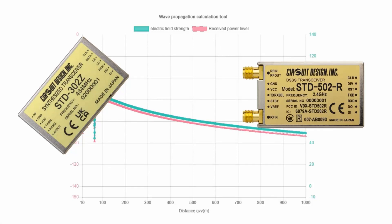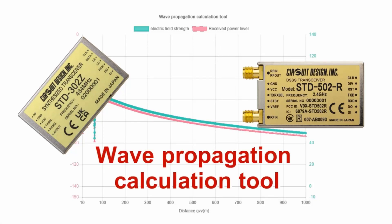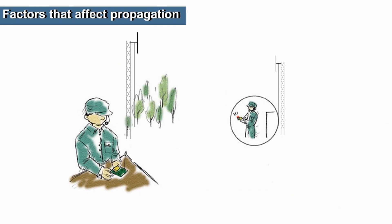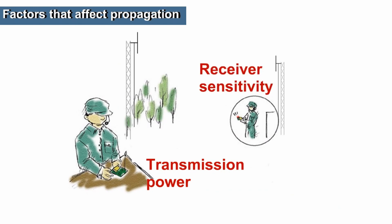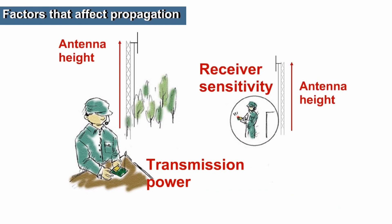Hello, I'm John Bell, Application Engineer at Circuit Design Japan. In today's video, we are going to introduce the Wave Propagation Calculation Tool. The goal of this tool is to teach those who use radio modules, like the ones at Circuit Design, on how various factors such as transmission power, receiver sensitivity, and antenna height can affect their communication range.